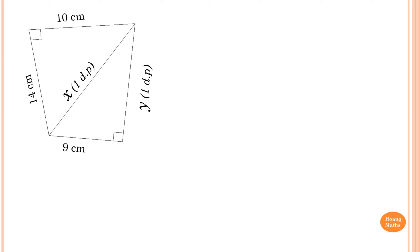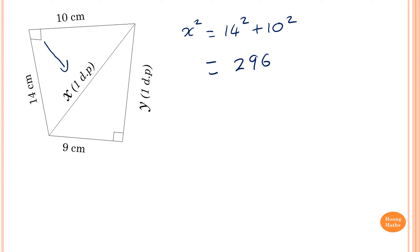Find the value of x and y correct to one decimal place. Before we find y, we need to find x first. We know that x is opposite this right angle, so it's the hypotenuse. So x squared is equal to 14 squared plus 10 squared, which equals 296.